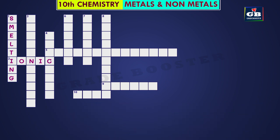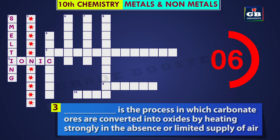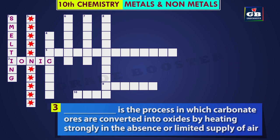Let us see the third one. Third down: dash is the process in which carbonate ores are converted into oxides by heating strongly in the absence or limited supply of air. What is that process called? The answer is calcination. Calcination is the process in which carbonate ores are converted into oxides by heating strongly in the absence or limited supply of air.